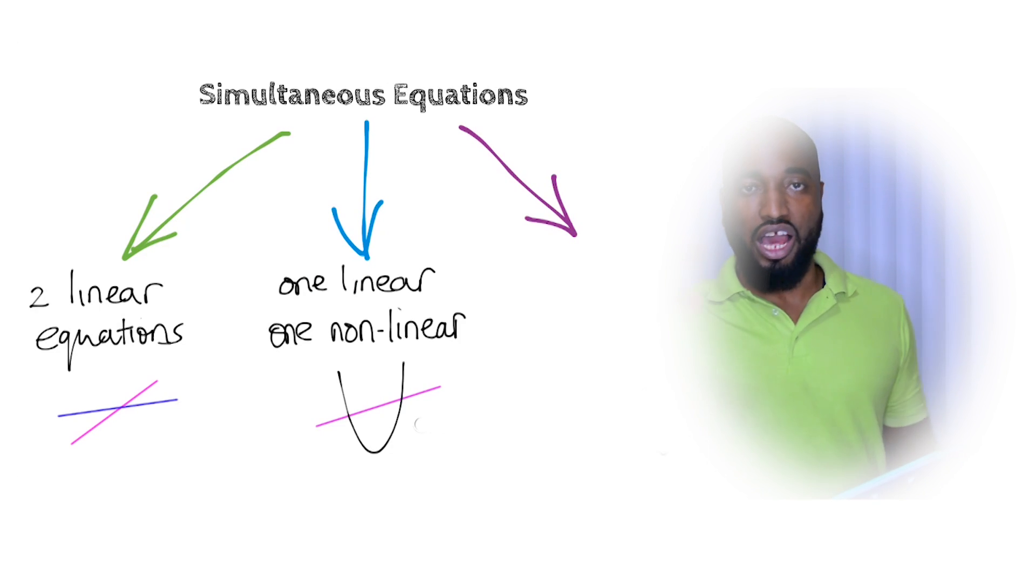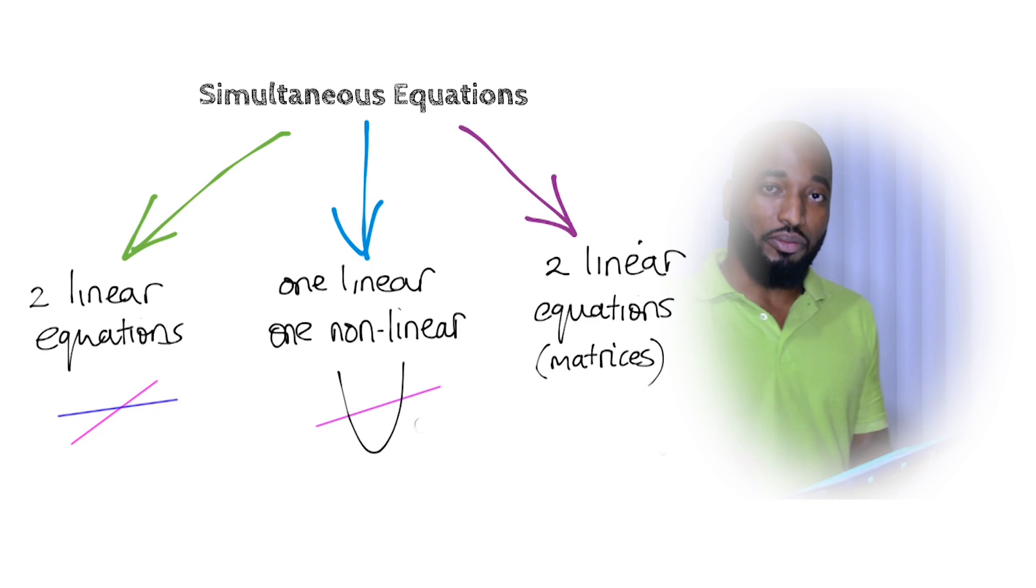Then it can come with one linear equation and one of the equations being non-linear. So you're looking at the curve and then a line cuts so you get two values of x, two values of y, essentially four values you'll get for that. And then there's a third way it can come where you have two linear equations but they want you to solve it using the matrix method. So you're going to do all that in these three videos.